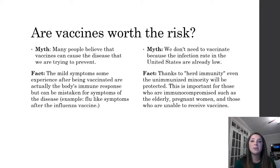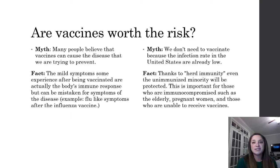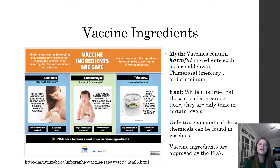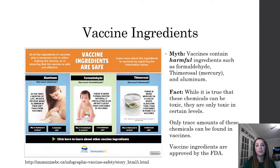The next myth is that we do not need to continue receiving vaccines because the infection rate in the United States is so low. This is important because there will always be a portion of the population — such as infants, pregnant women, the elderly, and those with weakened immune systems — that can't receive these vaccinations. The last point covers misconceptions regarding ingredients used to make vaccines. Many vaccines contain ingredients that concern people, such as aluminum, formaldehyde, and mercury. While these ingredients can cause harm at toxic levels, the amounts contained in a single vaccination are only found in trace amounts and are approved by the FDA.